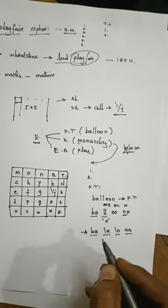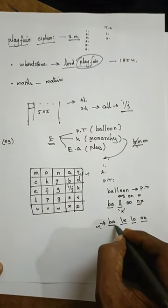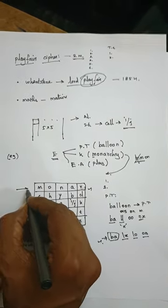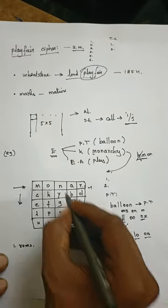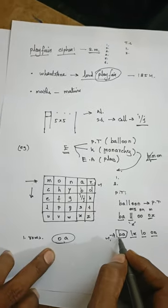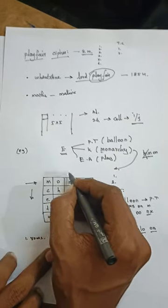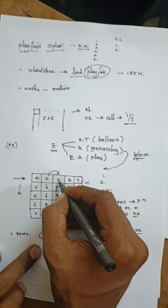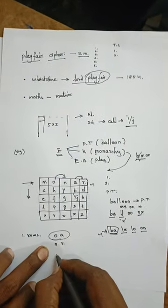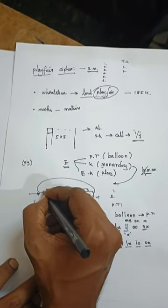Now the key and plaintext are ready, so we implement the algorithm. There are rules depending on where the pair of letters falls in the matrix. Rule one: if the pair falls in the same row, take the next letter to the right in that row. For example, if O and A are in the same row, take the next letter of each: N instead of O, and R for A. If a letter is at the end of the row, rotate back to the first letter of that row.